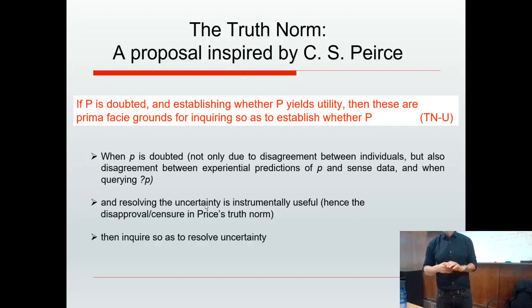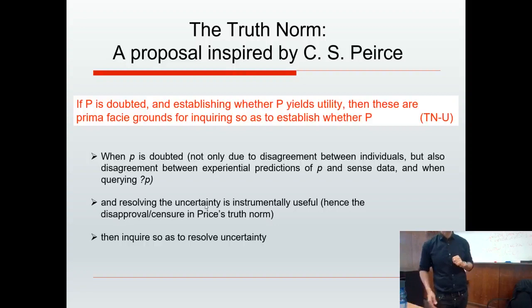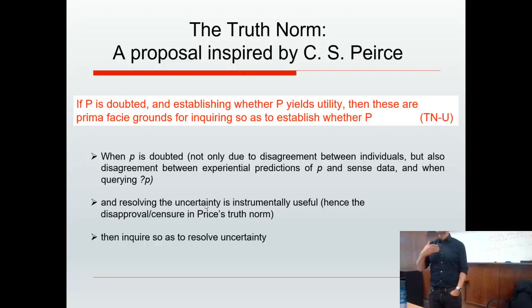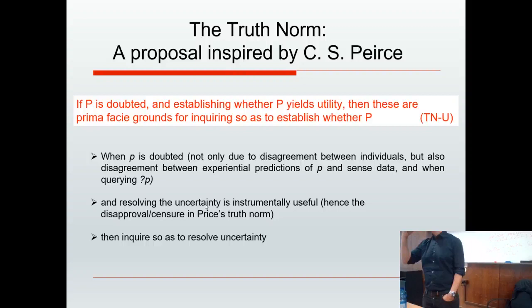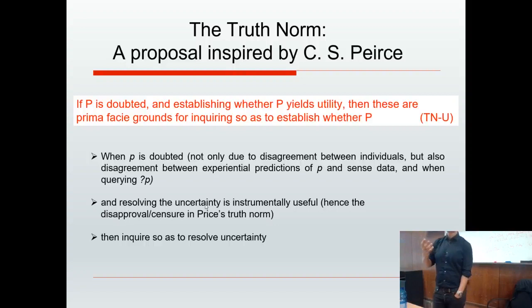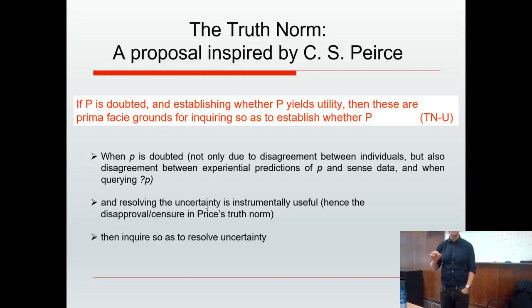Now I come to my proposal for the truth norm, inspired by Charles S. Peirce. This is an alternative to Hugh Price's norm: if P is doubted — not just when somebody disagrees with me in dialogue, but when I'm individually thinking about it, or when my perceptual predictions are doubted — and establishing whether P yields utility, then these are prima facie grounds for inquiring so as to establish whether P, in other words to resolve the uncertainty. That's essentially my conception of the truth norm.